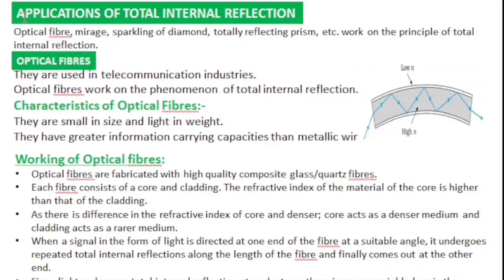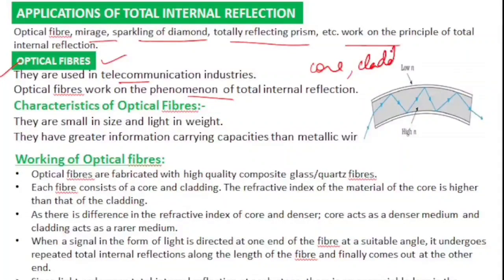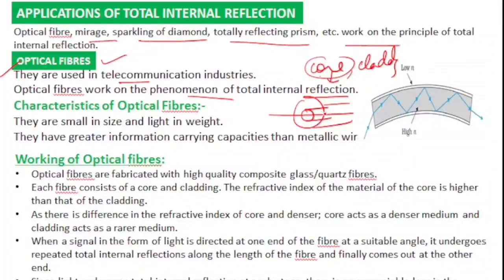There are different applications of total internal reflection. The sparkling of a diamond works on the principle of total internal reflection. I will discuss in detail about optical fiber. Optical fibers are used in telecommunication industries and are based on the principle of total internal reflection. An optical fiber consists of a core and cladding. The core has a refractive index greater than the cladding. The core is the inner part and cladding is the outer part.